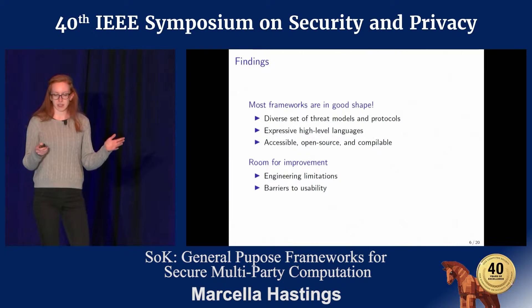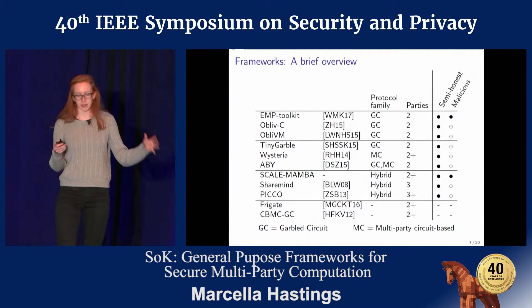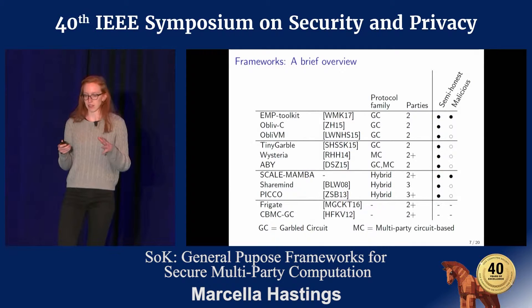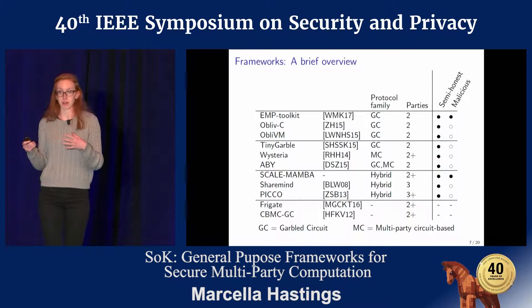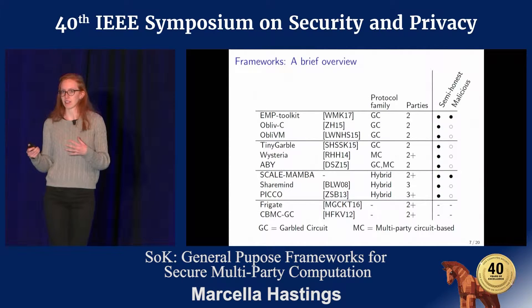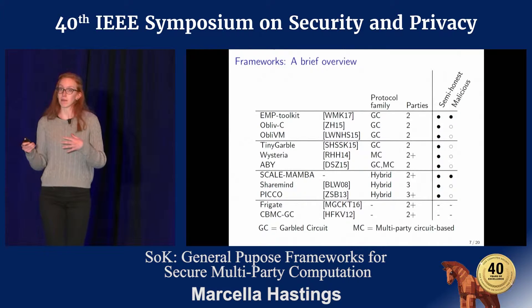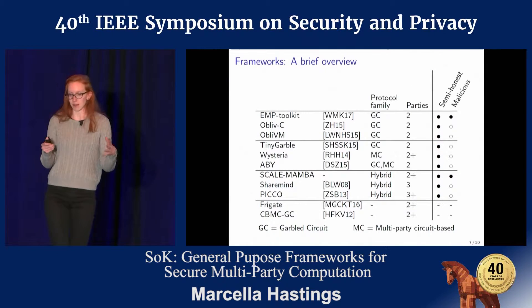Before I go into those issues, I'd like to give you a higher-level picture of what we found. These are the nine frameworks we looked at and the two circuit compilers at the bottom. You can see the number of parties they support and the threat model. In the semi-honest model, an adversary will execute the protocol correctly but will try to learn something about other parties' input. In the malicious model, the adversary may not stick to the protocol and will try to induce an incorrect output.